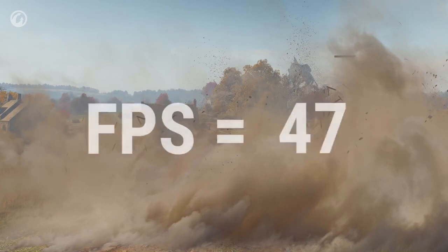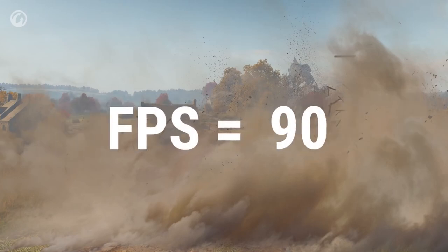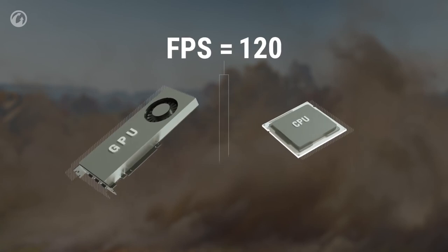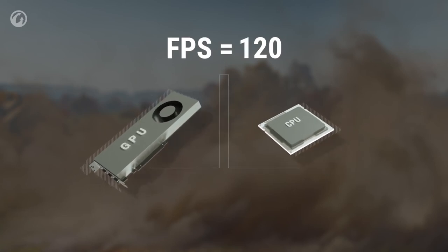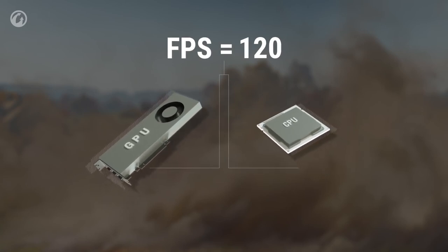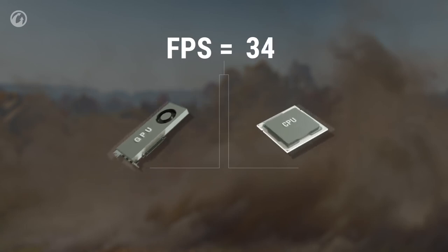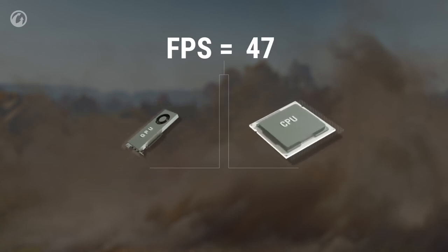The number of frames per second depends most of all on the combination of the CPU and graphics card, and it must be balanced. A powerful graphics card will be idle when coupled with a weak CPU. At the same time, a powerful CPU won't help a weak graphics card ensure high FPS.